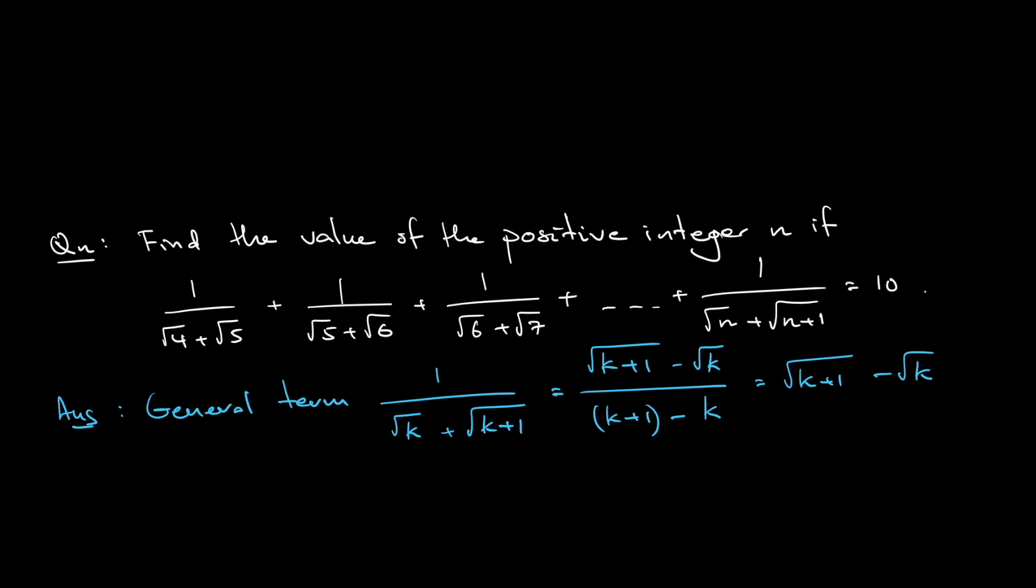If we use this general term, for the first fraction our value of k is equal to 4. That means 1 over square root of 4 plus square root of 5 equals square root of 5 minus square root of 4.